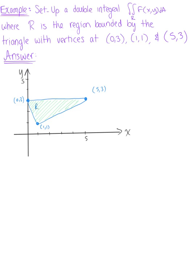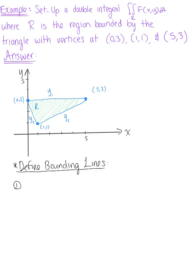In order to set up this double integral, we need to define the curves that bound this region. We have curve number 1, curve number 2, and curve number 3. So we're going to define the bounding lines. Our first line is easy enough — we have a horizontal line at y = 3, so we label our first curve y₁ as the horizontal line y equals 3.